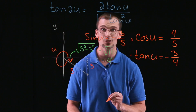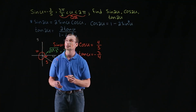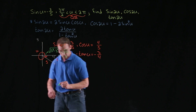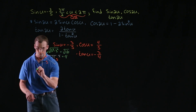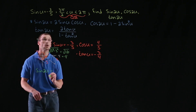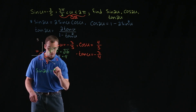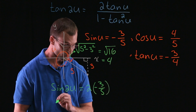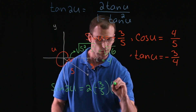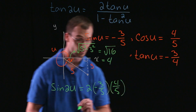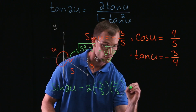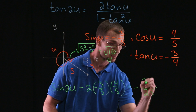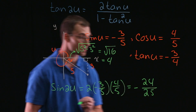Now we have our sine, cosine, and tangent, and we can plug them into our formulas to find sine of two u, cosine two u, and tangent of two u. Let's start with sine of two u, which is two sine u times cosine u. This is equal to two times sine of u — negative three-fifths — times cosine u — four-fifths. Multiplying this out, we get a denominator of 25, and two times three times four is 24, so negative 24 over 25.